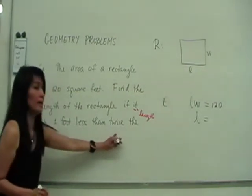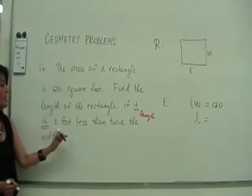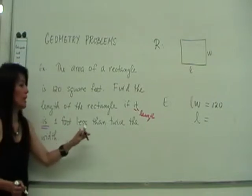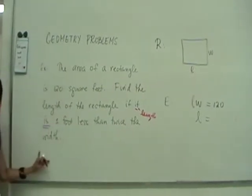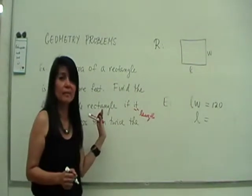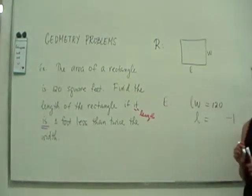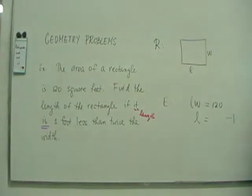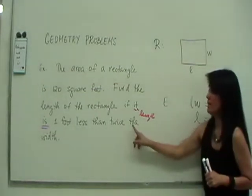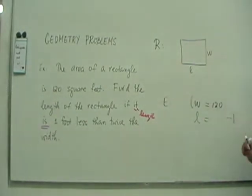You follow so far how we're doing it? Length is. And now we have the right side. The right side is a translation problem. How do you translate one foot less than twice the width? One foot less than, so where should you put the one? At the end. At the end, that's minus one. Minus one. Less than what? Twice the width. So two W. Twice the width. But W is width, so two W. Two W minus one. Did you understand that?